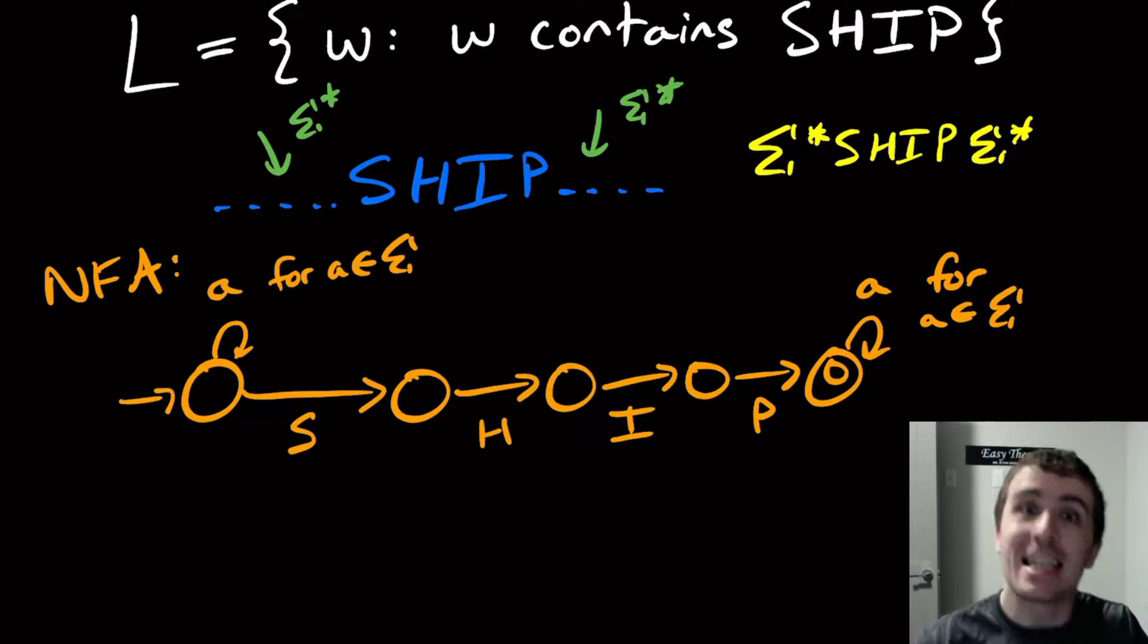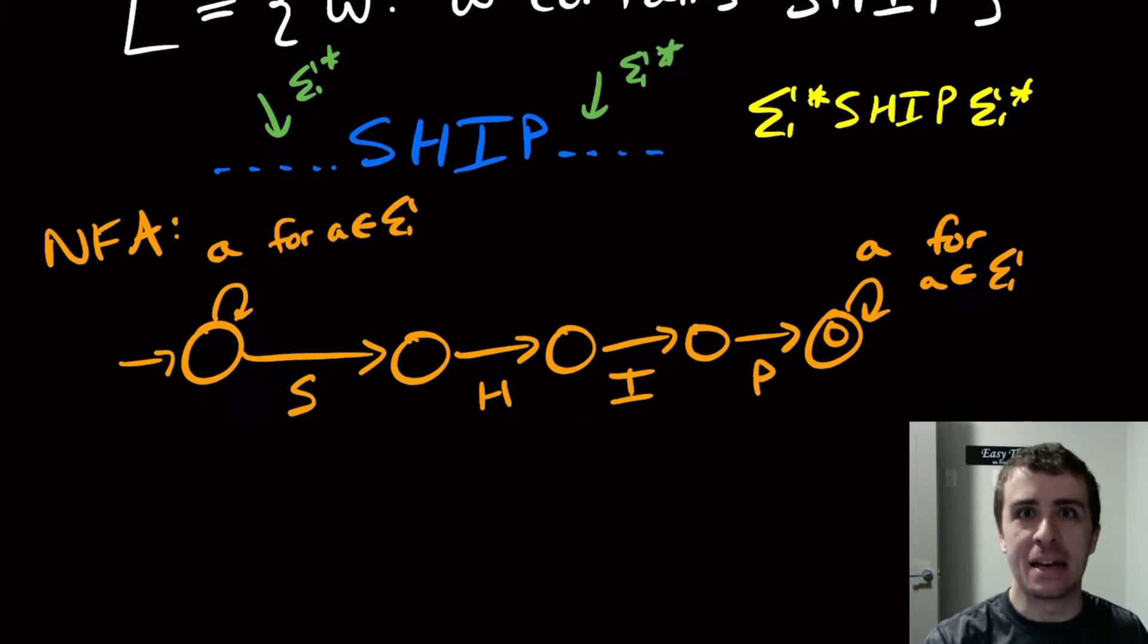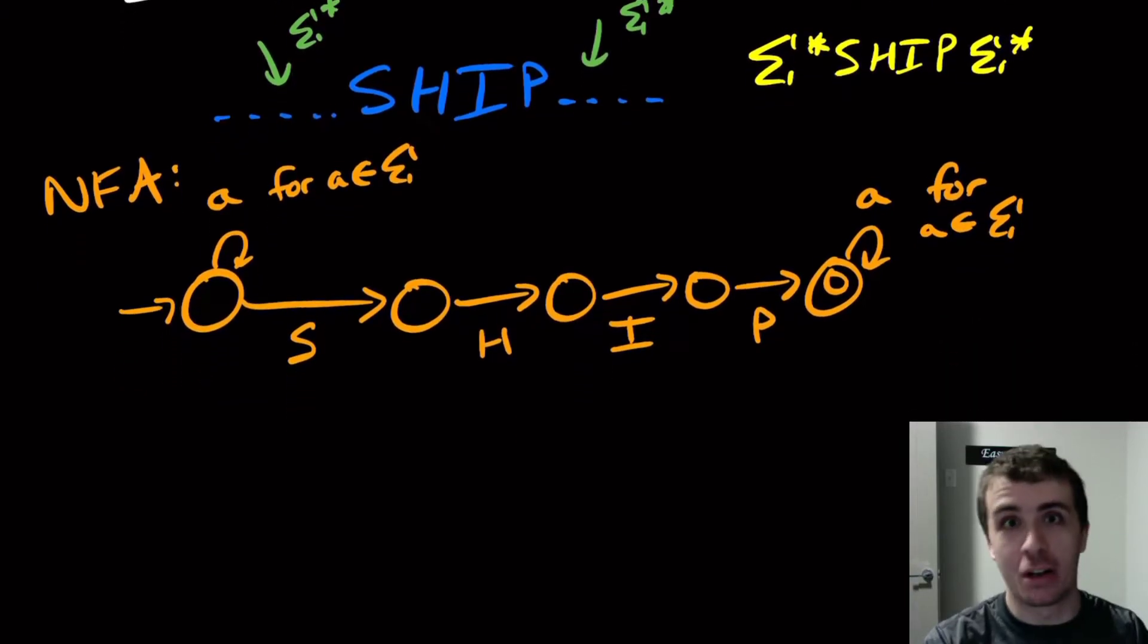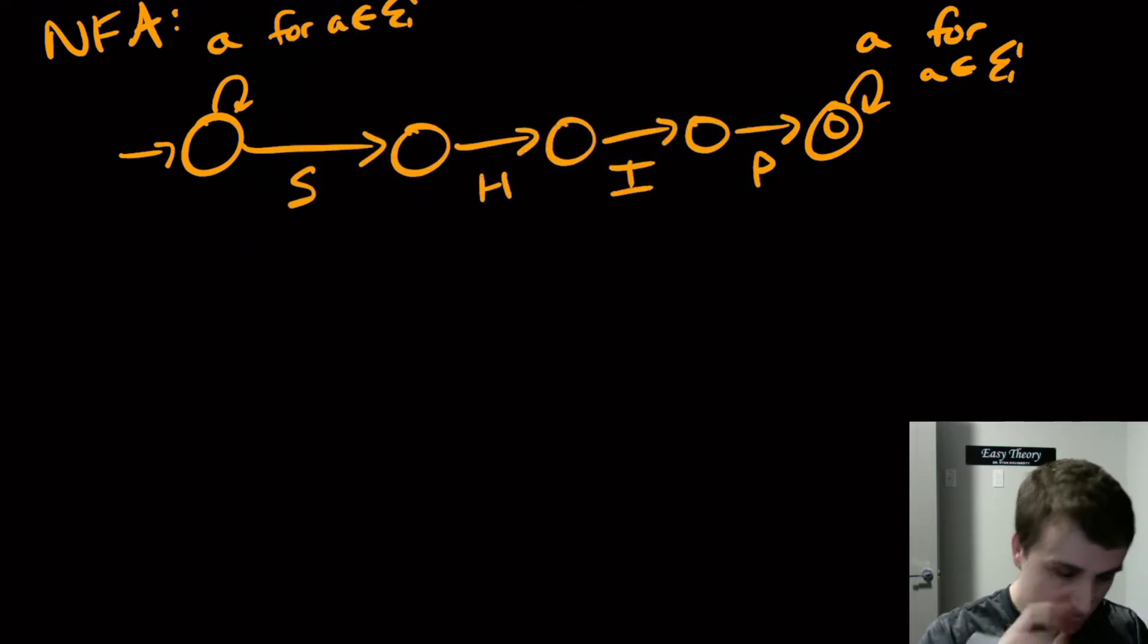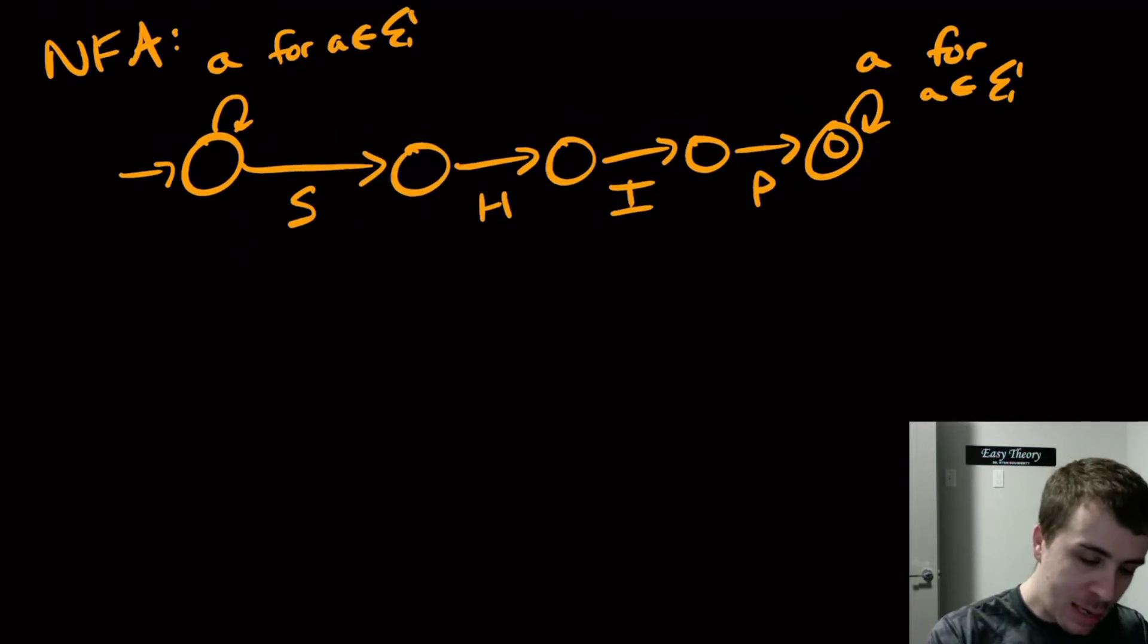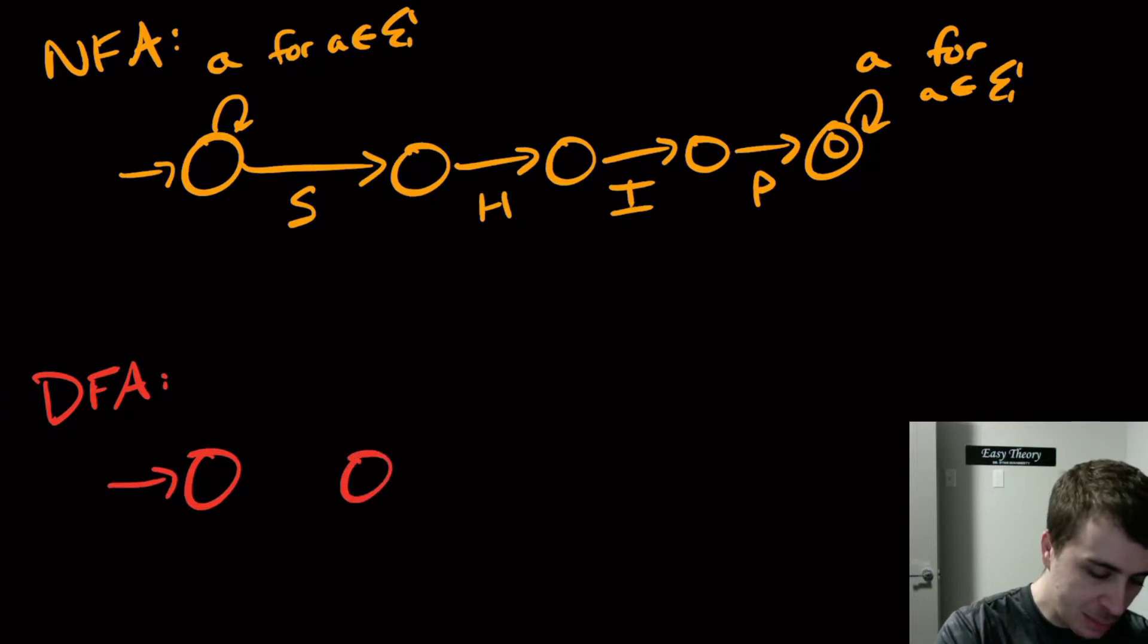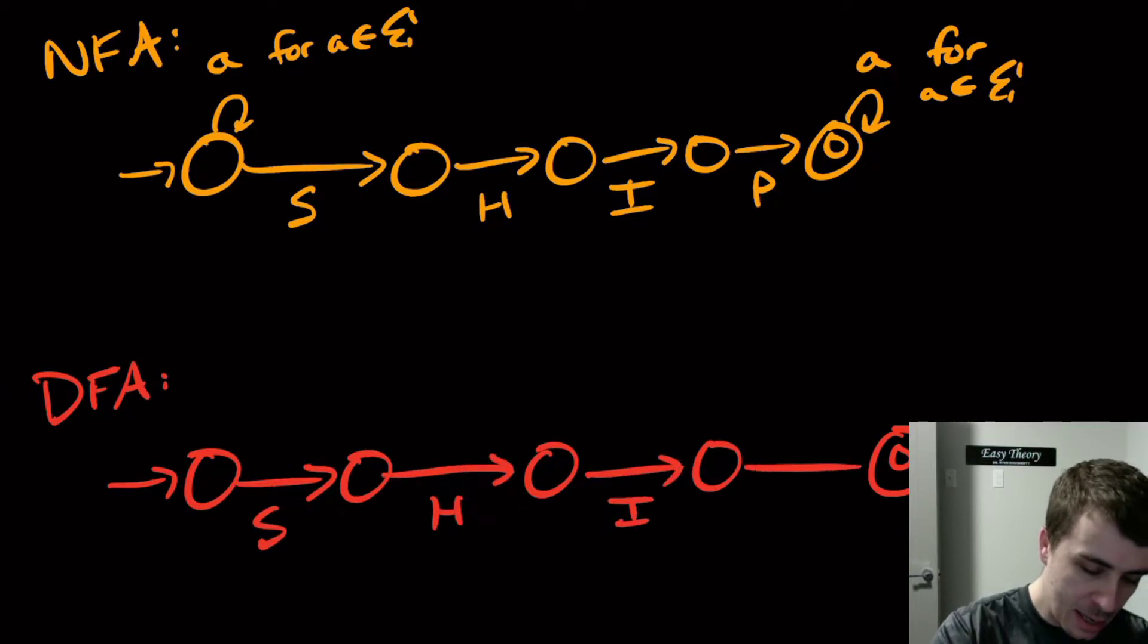But obviously we can't use an NFA in the real world. We want to detect whether our ships are stuck, so let's build a DFA so that we can actually test whether our ships are stuck. What we would need to do is something similar to this. I'm going to have the same states here, still having the S, the H, the I, and then the P.